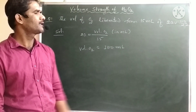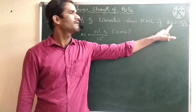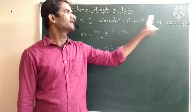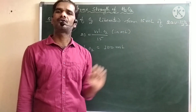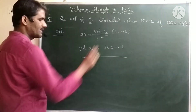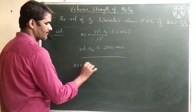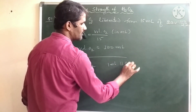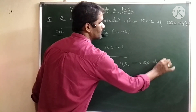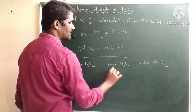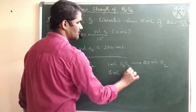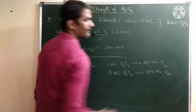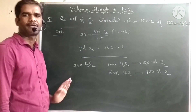Orally: 20V H2O2 means 1 volume of H2O2 gives 20 volumes of O2. So 15 mL gives 15 × 20 = 300 mL of oxygen. You can apply the formula or reason it out directly to get the same answer of 300 mL.